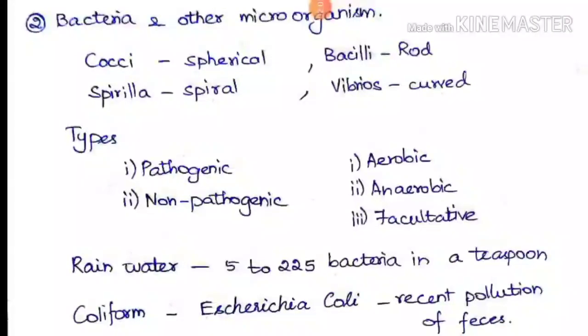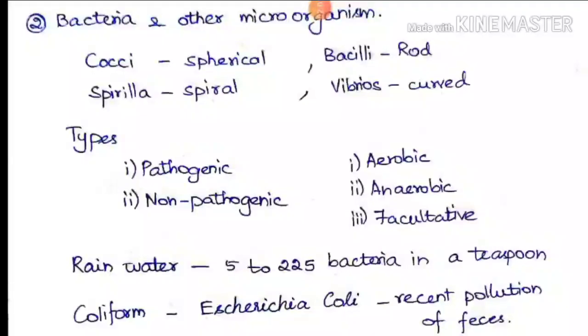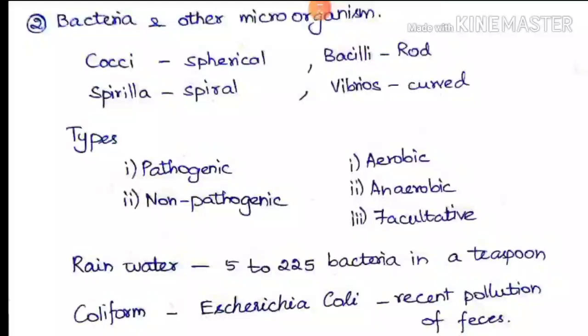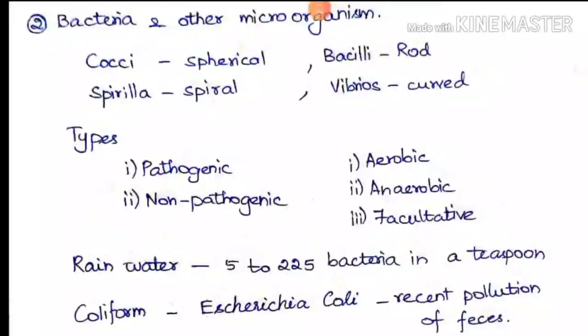The next is rainwater. When rainwater is coming, it will absorb all the microorganisms present in the air, so the initial stage of rainwater will have more microorganisms. A teaspoon of rainwater will have nearly 5 to 225 bacteria in it.